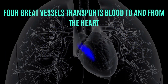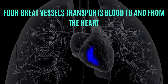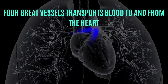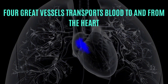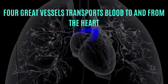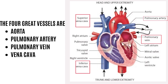Today's topic is about the great vessels of the heart. The major vessels of the heart, which are mostly found in the middle mediastinum, operate to transport blood to and from the heart as it pumps. There are four major vessels of the heart. These are aorta, pulmonary artery, pulmonary veins and vena cava.